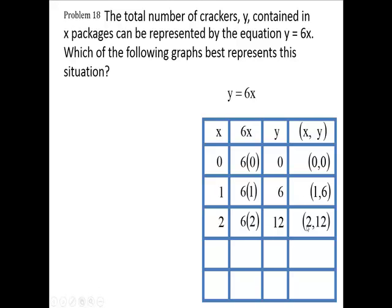Now the part that I don't like is all four graphs contain a negative 1 on it. Now how can you have a negative 1 package? Give me a break. Anyway, if you had a negative 1 package, you would have a negative 6 crackers. The thing that saves it here, it says which of the following graphs best represents. So none of the graphs are right, but one of them is better than the others.